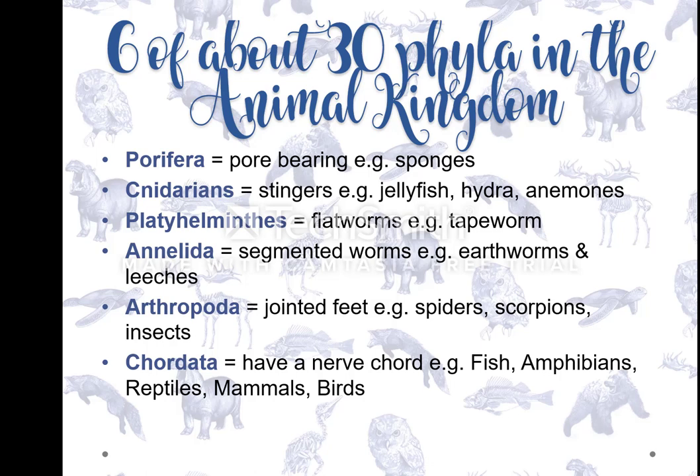Continuing on from my lesson on the key features of body plans, we need to now talk about the 6 phyla. There are over 30 phyla in the animal kingdom and we are only going to learn about 6 of those. In grade 10 you did a lesson on classification, where you learned that a phylum is one of the ways that we group animals based on characteristics.